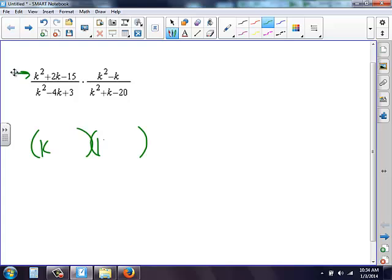A k here, a k here. My factor is 15: 1 times 15, 3 times 5. My goal is to get a positive 2. The only way is 3 and 5, where my 3 is negative. So I'm going to get minus 3 plus 5.